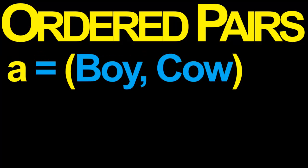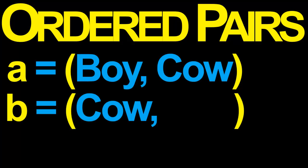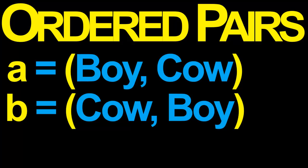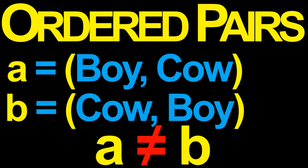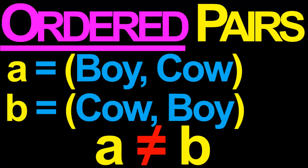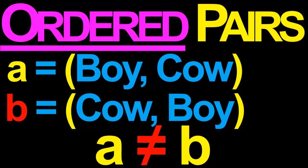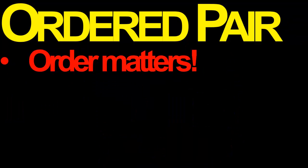The first important difference between an ordered pair and a set is that in an ordered pair, the order of the things does matter. Consider the ordered pair A, which consists of boy and cow, and the ordered pair B, which consists of cow and boy. In contrast to the sets A and B we saw earlier, the ordered pairs A and B are not the same thing — we treat them as two distinct objects. If we put boy before cow, we get the ordered pair A; if we put cow before boy, we get the ordered pair B.